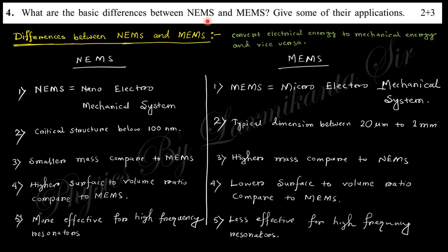Next question: What are the basic differences between NEMS and MEMS? Give their applications. NEMS stands for Nano Electro Mechanical System and MEMS is Micro Electro Mechanical System. These systems differ in size but convert electrical energy to mechanical energy and vice versa.